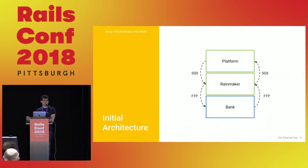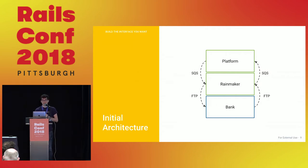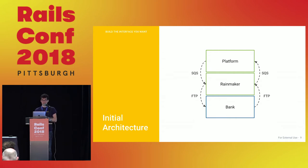On a set schedule, we receive responses. Rainmaker parses those files and sends messages back to the platform. We built the interface we wanted, using an asynchronous SQS-based microservice connecting directly to our vendor. But this doesn't scale, especially when you consider multiple FTP vendors — our bank is not the only FTP-based vendor in the entire ecosystem.